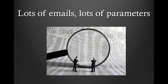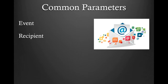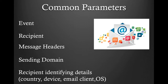Now that we've covered all the different events and their associated webhooks, let's dig into the different parameters and information associated with each webhook event. All of the webhooks will have common parameters sent with each event. These are the event type, the recipient that triggered the event, some common message headers such as the message ID, tag, or campaign ID, and the sending domain. There will also be parameters that are specific to the type of event.